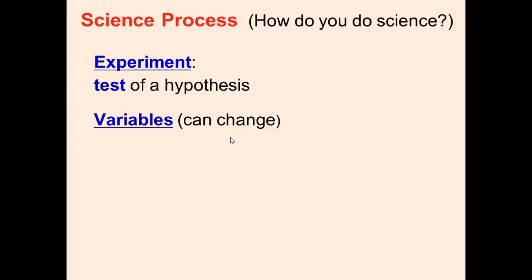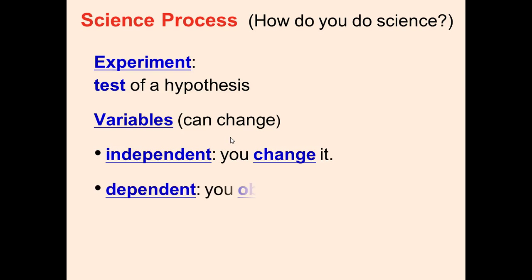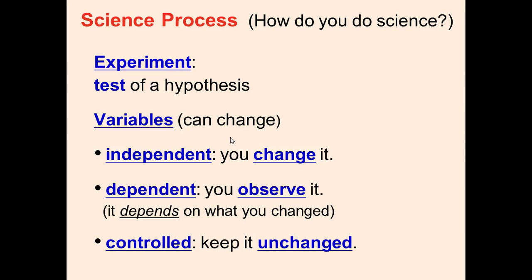An experiment is used to test a hypothesis, and there's three types of variables: independent variable, dependent variable, and controls. Independent variable is what you change. Dependent variable is what you observe or measure. A good way to remember this is, it depends on what you change. The controls are the other variables kept constant. It's important to only change one variable, so you know that one variable is causing the whole change.